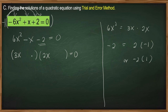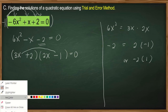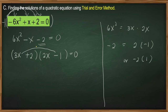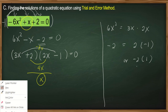Let's use positive 2 here and negative 1 here. Getting the product of outer terms and inner terms: 3x times negative 1 is negative 3x, and 2 times 2x is equal to 4x. Adding them, negative 3x plus 4x is equal to x. That is now equal to our linear term, so these are the correct factors.